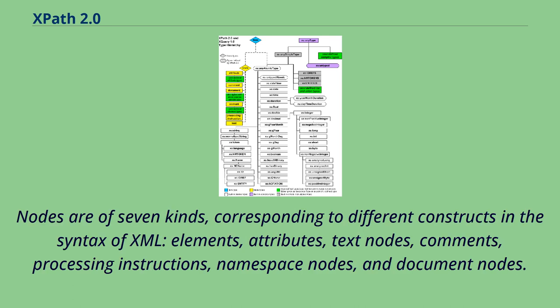Nodes are of seven kinds, corresponding to different constructs in the syntax of XML: elements, attributes, text nodes, comments, processing instructions, namespace nodes, and document nodes.